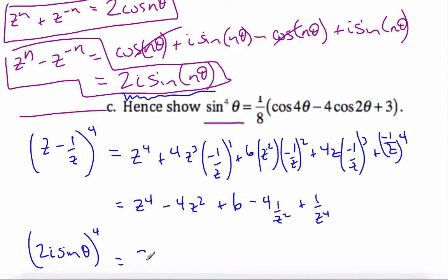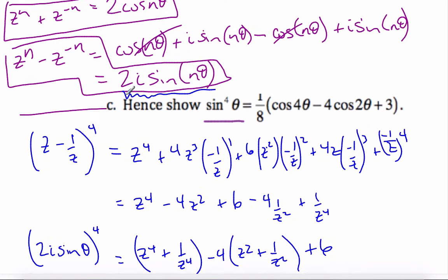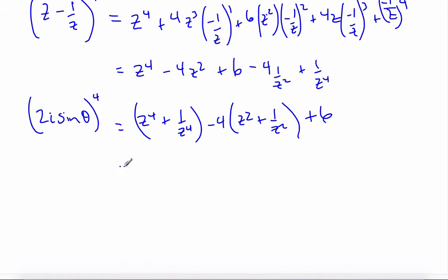For sine, both sine and cosine, so I can take z to the 4th plus 1 over z to the 4th, there's a quantity. I can take minus 4, z squared plus 1 over z squared, because the minus is out front. And then finally, plus 6, if I rewrite it. Well, when I have z to the 4th plus 1 over z to the 4th, that's the cosine relationship where n is 4. So this now is 2 cosine 4 theta.